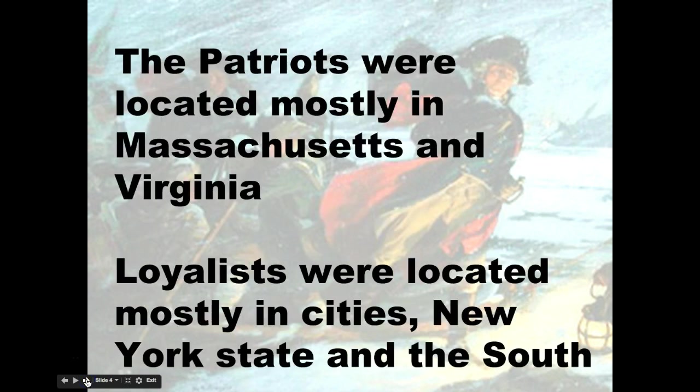As far as where they're located, there's no really definite area, but a lot of patriots were located in the Massachusetts area as well as Virginia. There were lots of loyalists located in the cities — New York City had a lot of loyalists — and also in the South. We're going to talk later about how the British are going to move down into the South towards the end of the war to take advantage of those high pockets of loyalists in the Southern states.